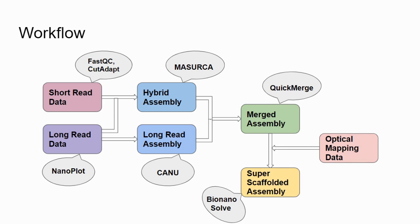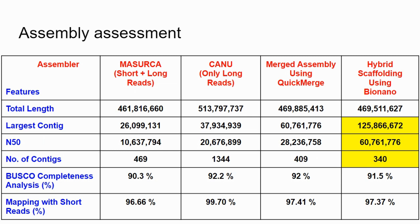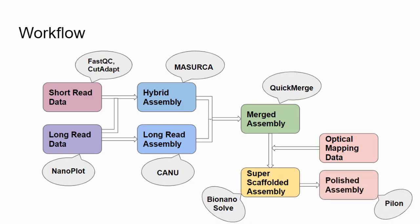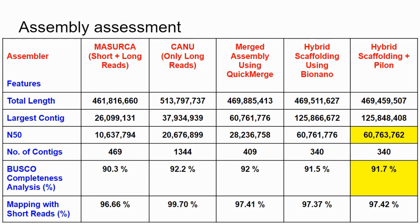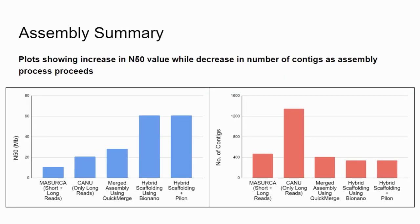We then used optical mapping data to superscaffold this contig-level assembly, using the Bionano Solve suite. After optical mapping scaffolding, there is a drastic change in N50 — it went up to 60 MB and the number of contigs decreased to as few as 340, with BUSCO score remaining above 90%. We then polished the assembly using our highest quality short-read data, resulting in slight further changes in N50 and BUSCO score.